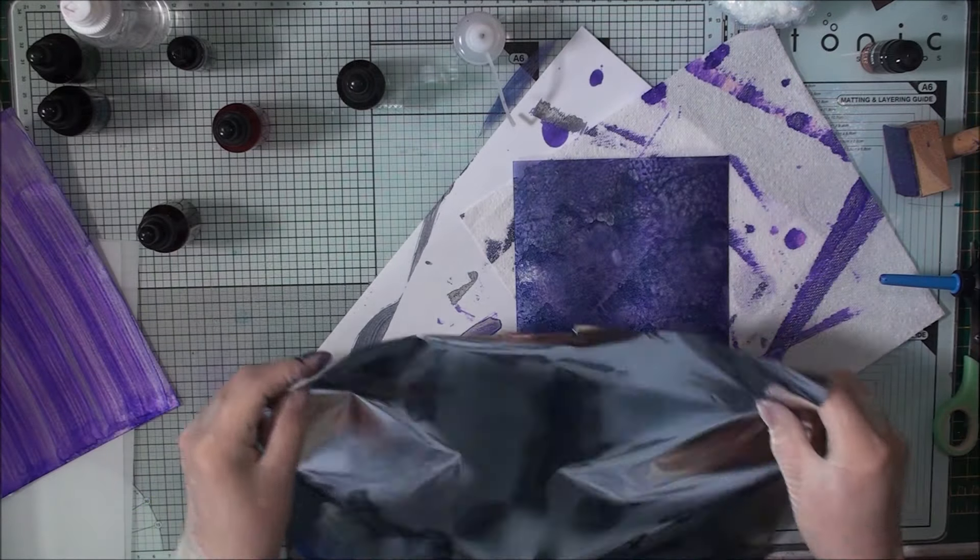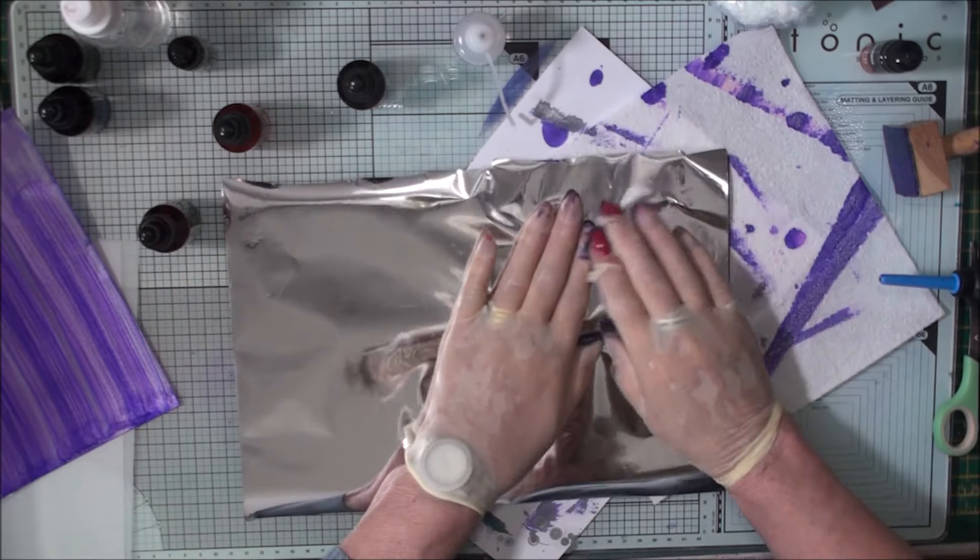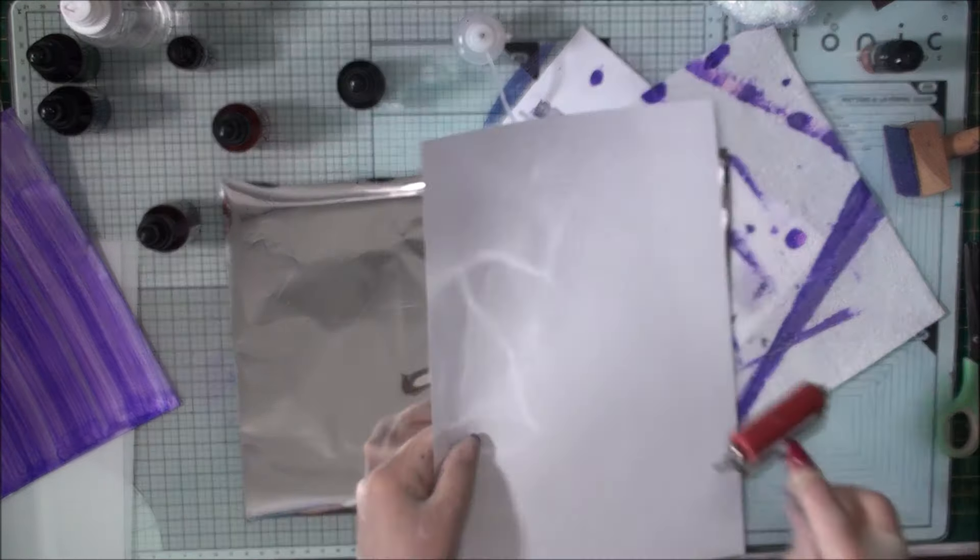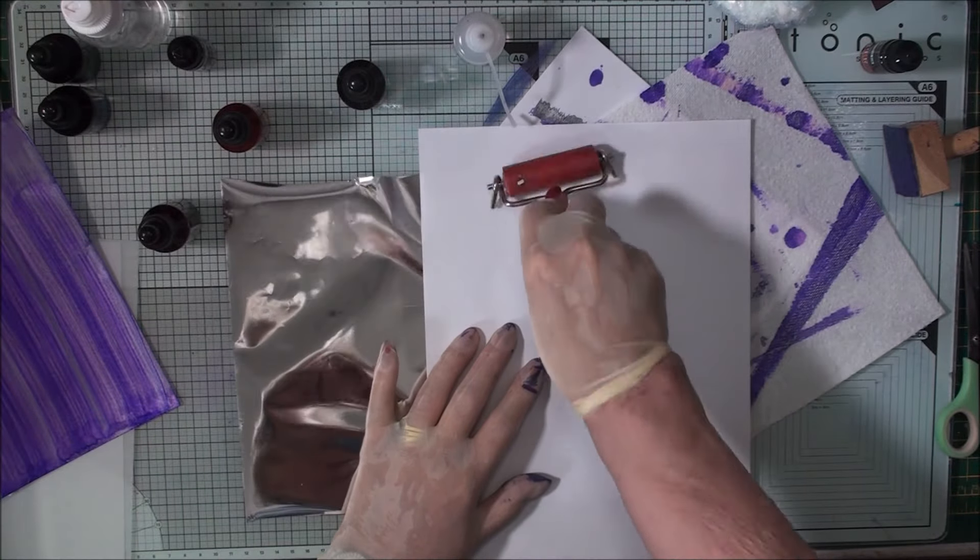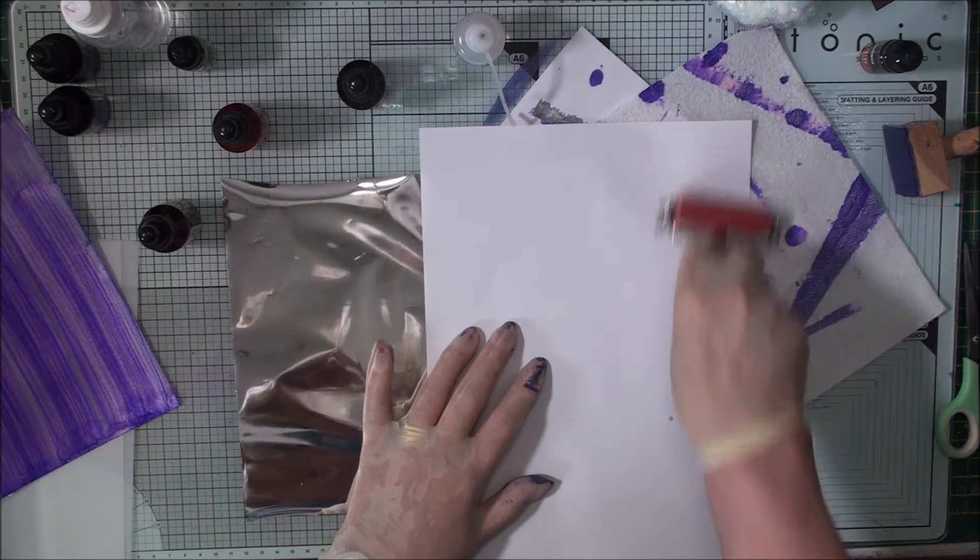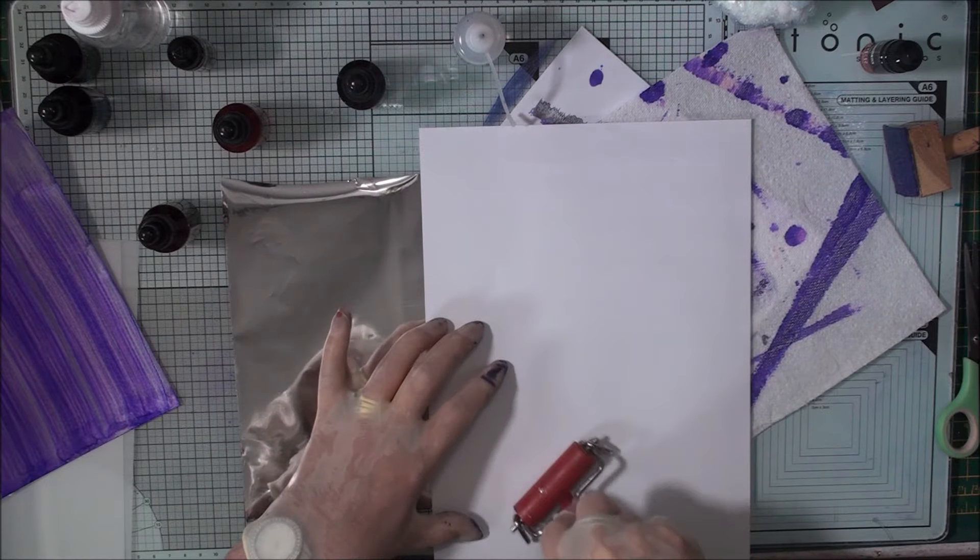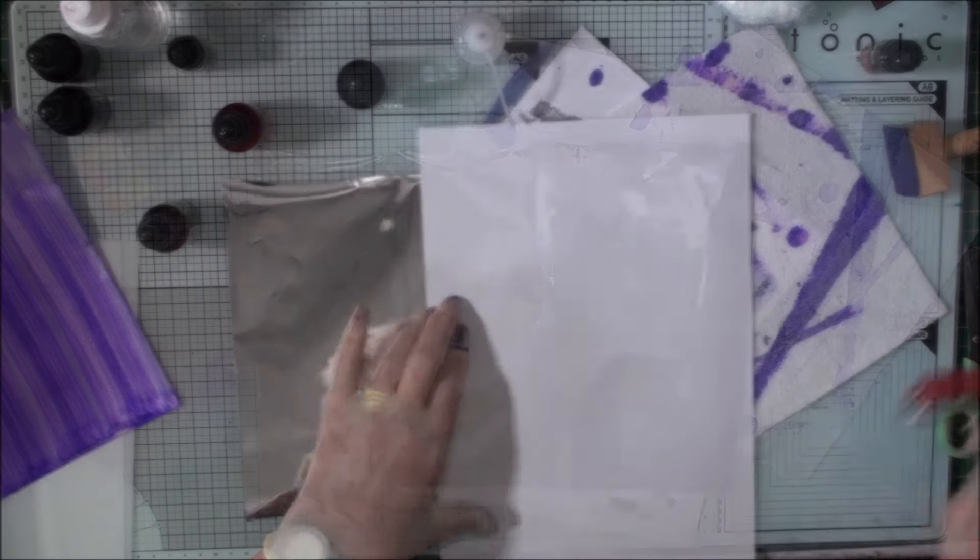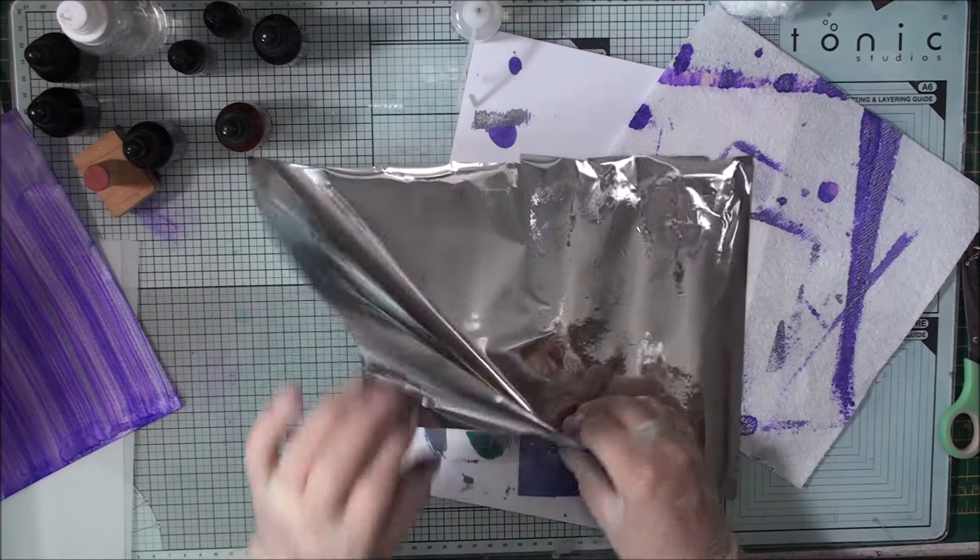Now before your alcohol dries, you can take some of your foil and you can run your foil over the top. So I'm just using a brayer just to make sure it's stuck down to the card.